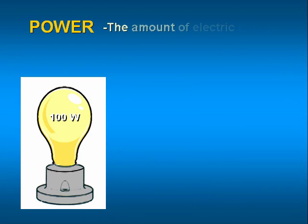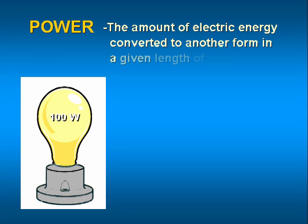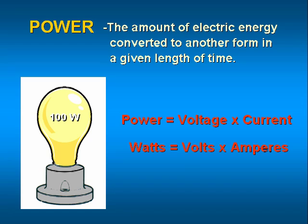Power is the amount of energy converted from one form to another in a given length of time. Another way to state this is that power is the rate at which energy is transferred. Power is energy divided by time. In electrical terms, power is equal to voltage times current. The unit for power is the watt. So we can write that watt equals voltage times current, or P equals V times I, where P equals power, V equals voltage, and I equals current. You should remember this relationship.